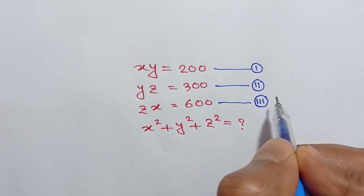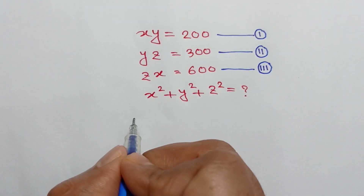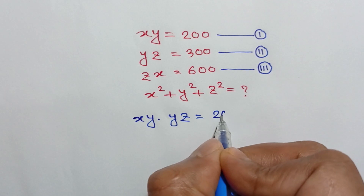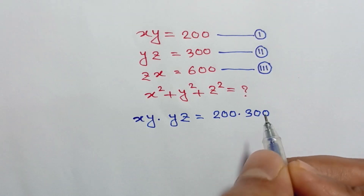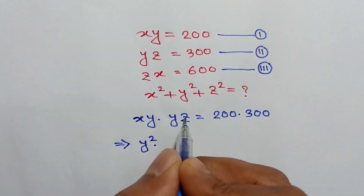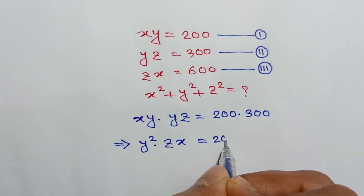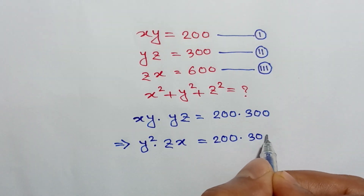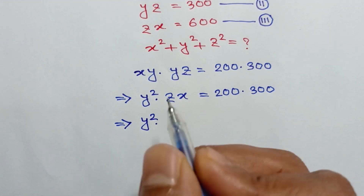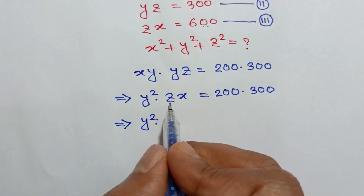Now, multiplying equation one and equation two, we can write xy times yz is equal to 200 times 300. Or y² times zx is equal to 200 times 300. Substituting the value of zx from equation three, which is 600, we get y² times 600 is equal to 200 times 300.